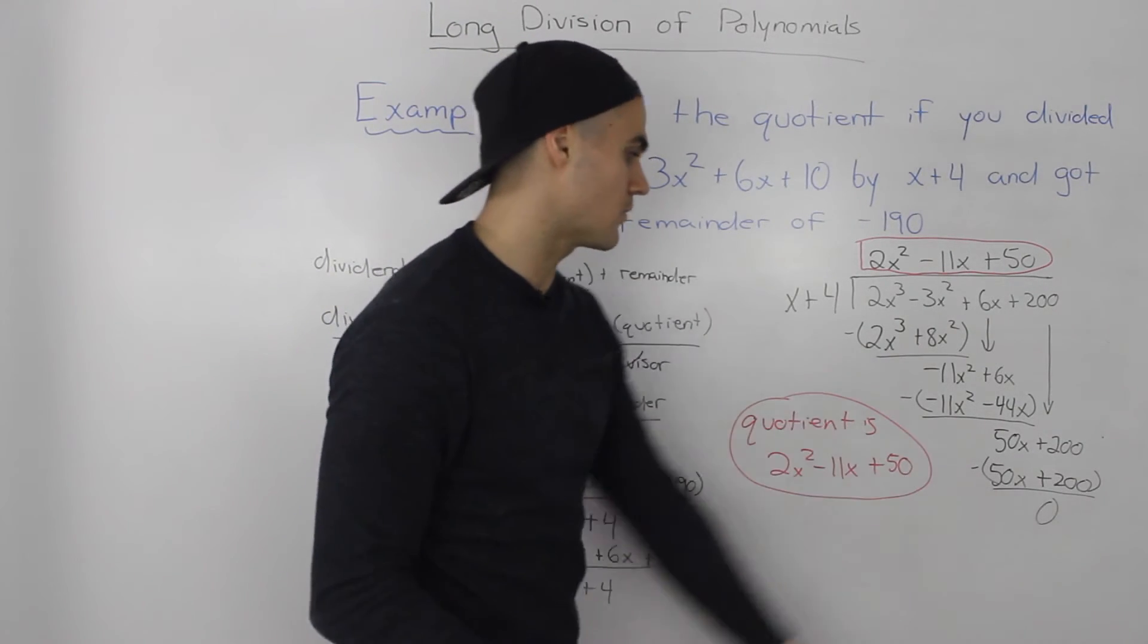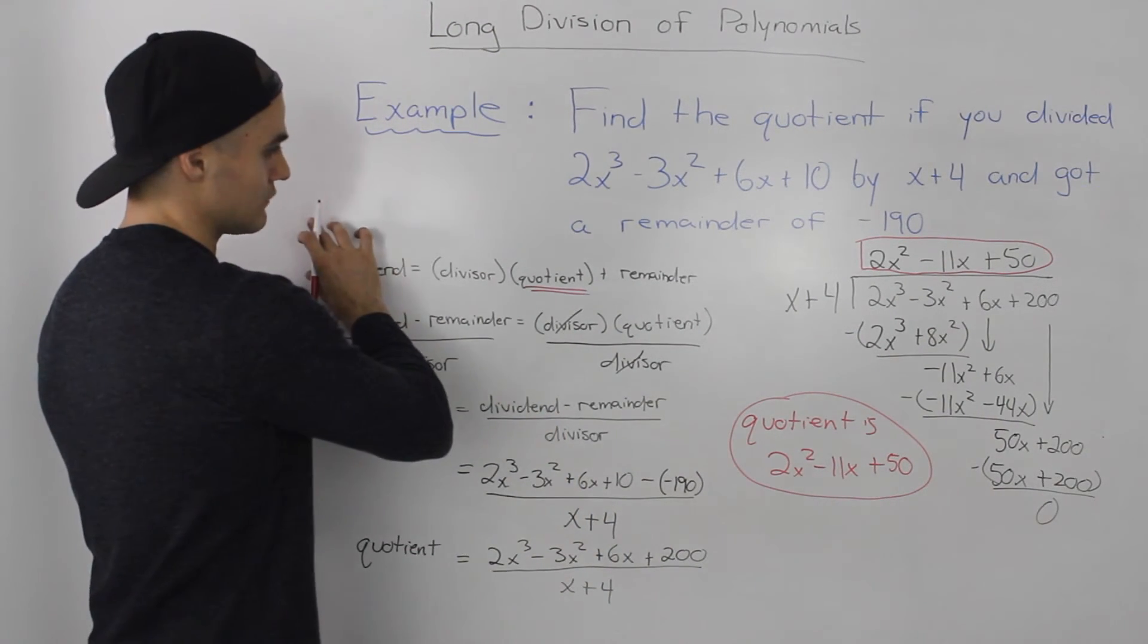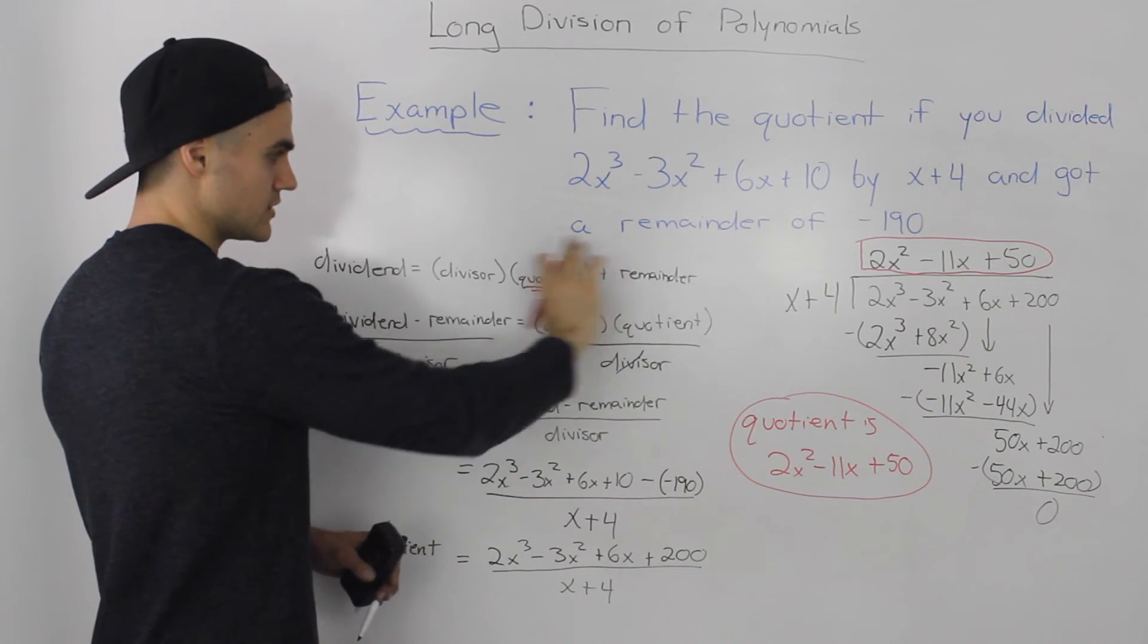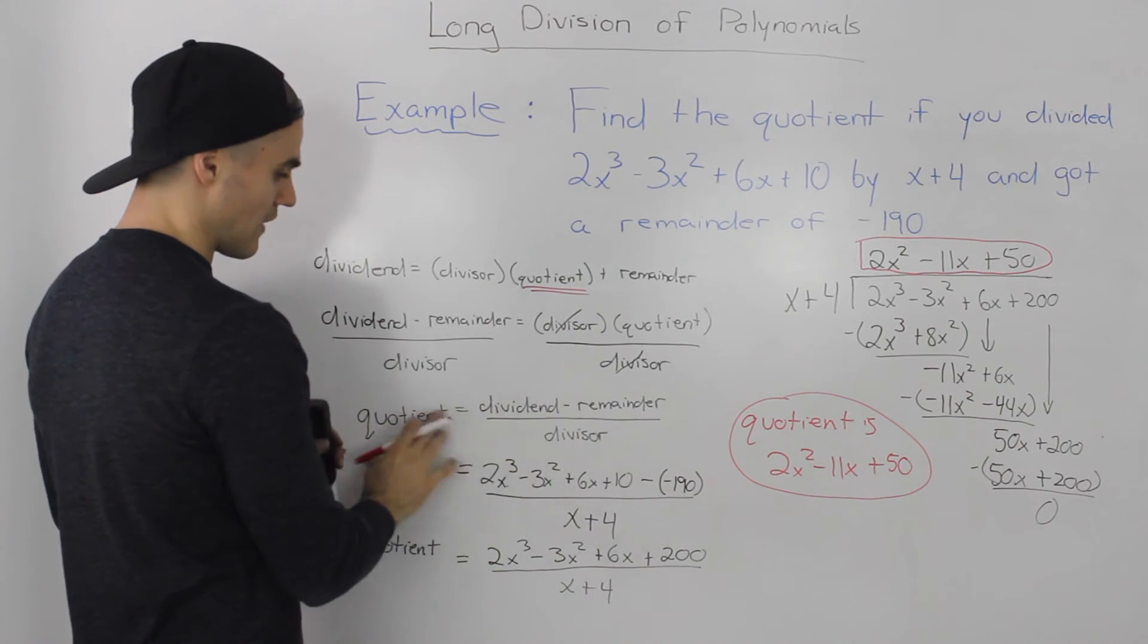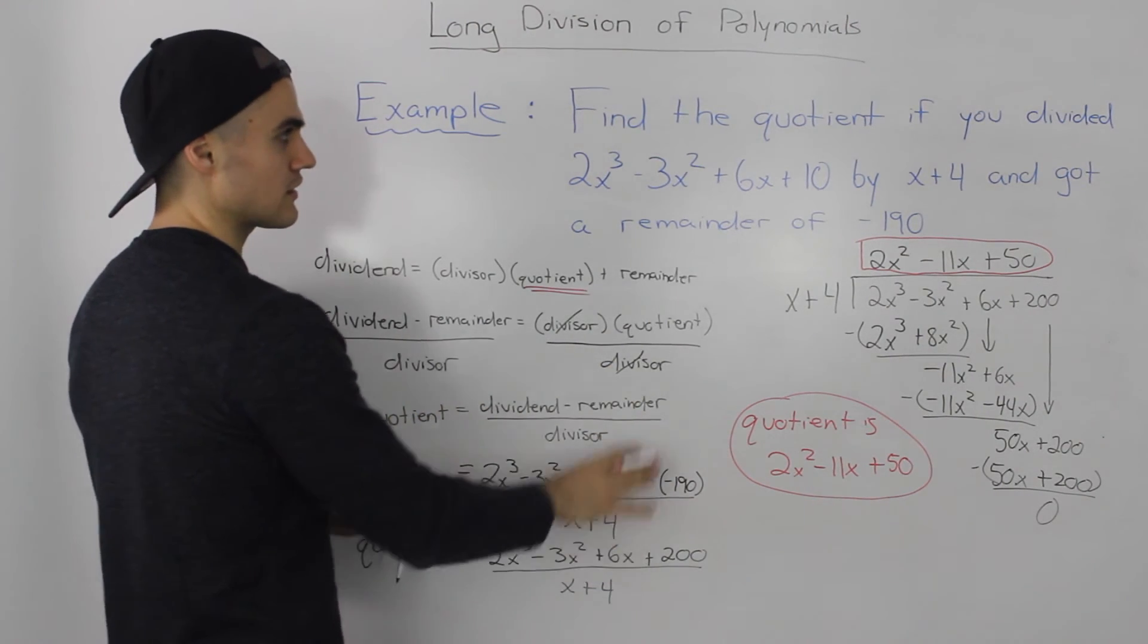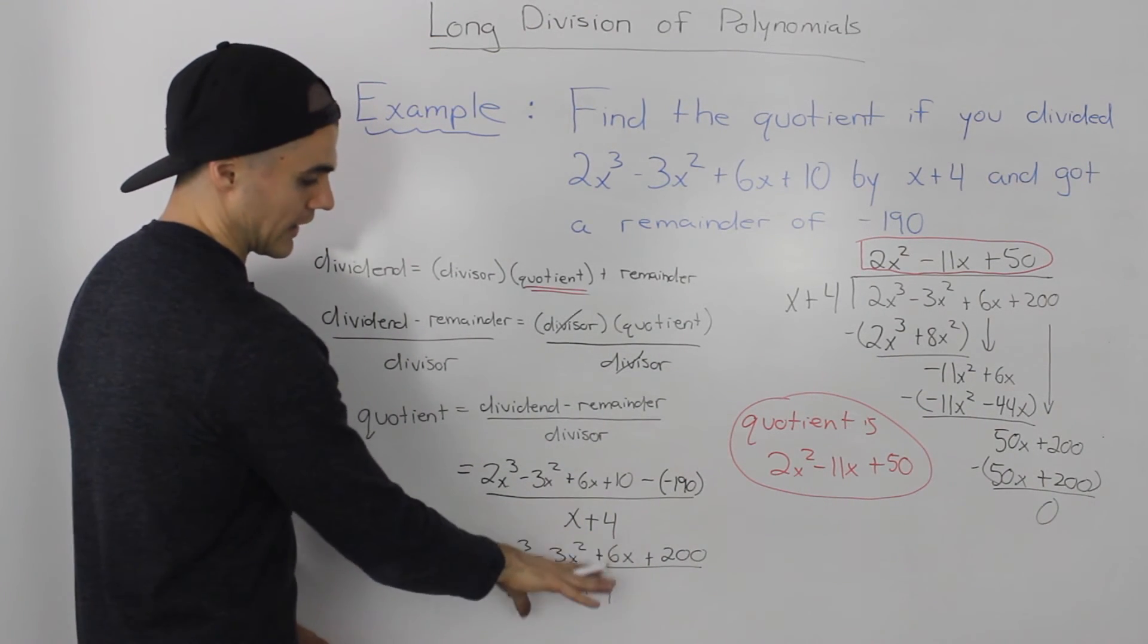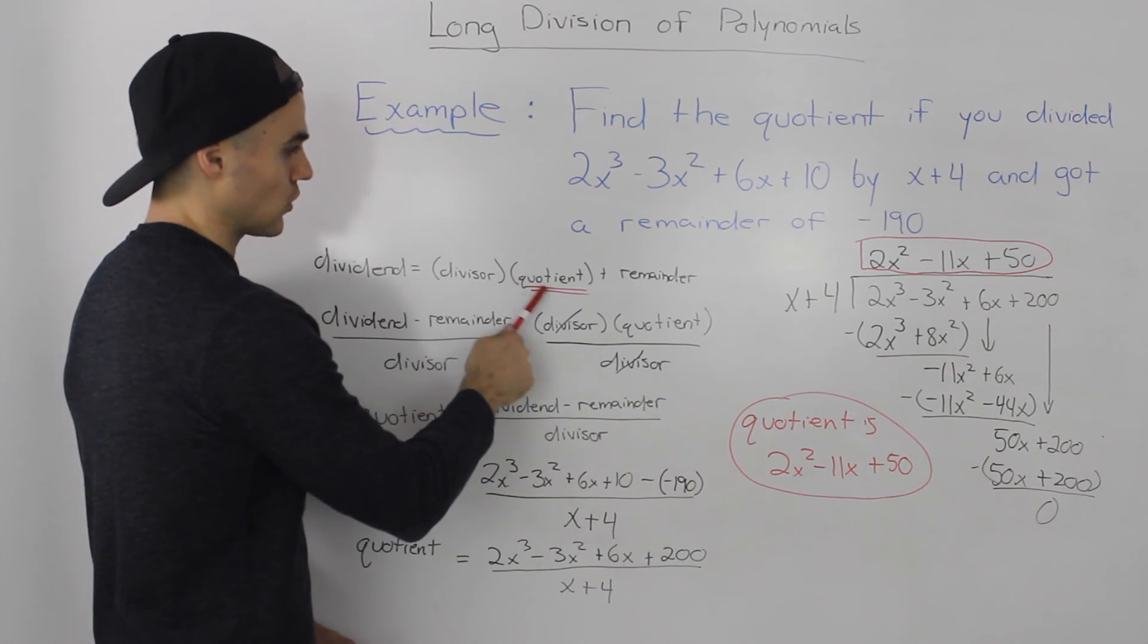The next thing I want to go over is a reminder that whenever you get a question like this where you have to find one of the pieces in the division statement, always write out the division statement in general form, isolate whatever you are finding, and then plug in the parameters of the question. Sometimes you'll get the result right away. Sometimes you're going to have to do an extra division, basically whenever you are finding the divisor or the quotient.